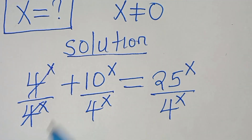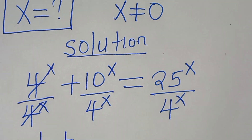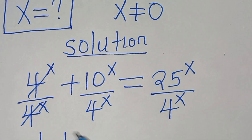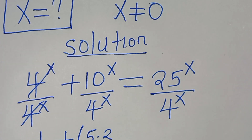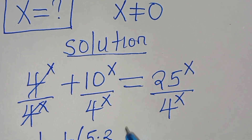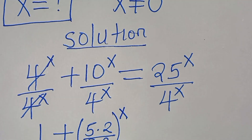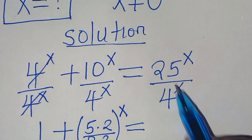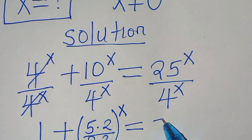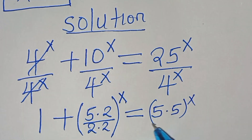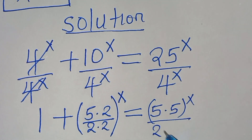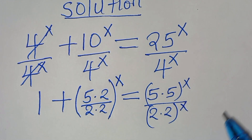Now we simplify. This gives 1 plus — we can express 10 as 5 multiplied by 2, then divided by 4, where 4 is 2 times 2, all raised to the power of x. On the right side, we express 25 as 5 multiplied by 5 raised to the power of x, divided by 2 times 2 raised to the power of x.